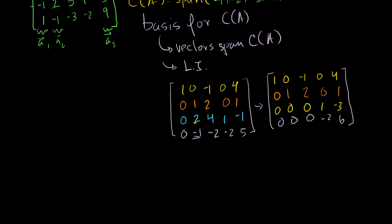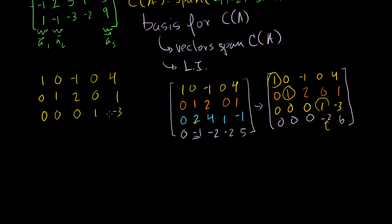We can see pivot entries forming. We have a pivot in column 1, column 2, and column 4 will be a pivot — we need to zero out the -2. Write the first three rows as: 1, 0, -1, 0, 4; then 0, 1, 2, 0, 1; then 0, 0, 0, 1, -3. Now replace the fourth row with itself plus 2 times the third row: 0, 0, 0; -2 plus 2 times 1 is 0; 6 plus 2 times -3 is 6 minus 6, which is 0.